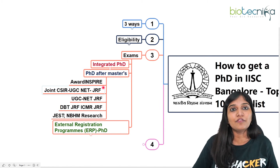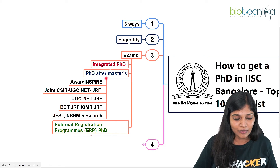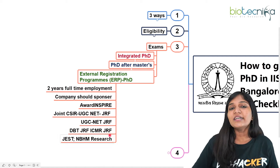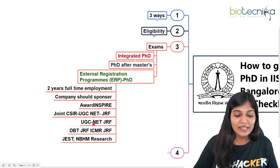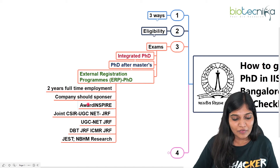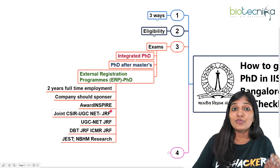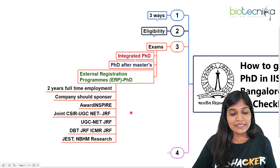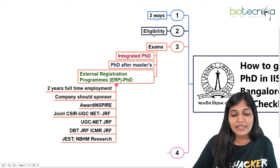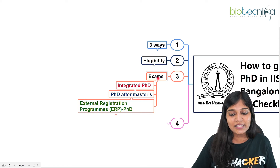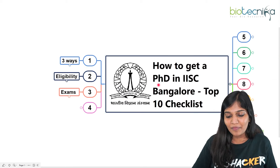You have to upload or submit all required information — or courier it — to IISc Bangalore when the official notification comes out. For the External Registration Program, candidates should have two years of full-time employment, and the company or institution is responsible for funding. They should also have cleared at least one of CSIR, UGC, DBT, or ICMR examinations, similar to the regular PhD after master's requirements.